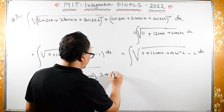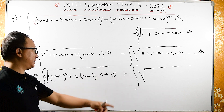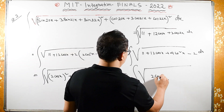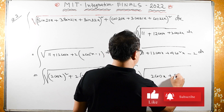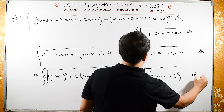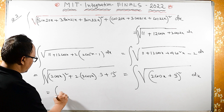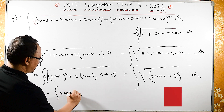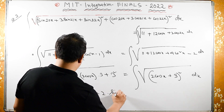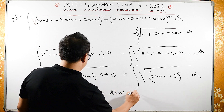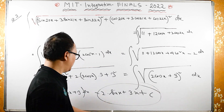Since 9 = 3², this is the same as a² + 2ab + b², meaning (2cos(x) + 3)². The square root and square cancel, so we have the integral of (2cos(x) + 3) dx, which equals 2 sin(x) + 3x + C. This is the required answer.